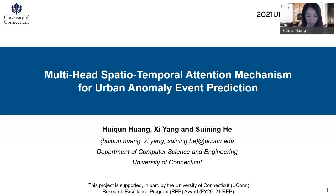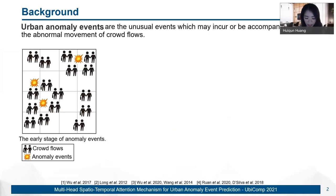Urban anomaly events, such as traffic accidents and noise incidents, are unusual events which may incur or be accompanied by the abnormal movement of crowd flows. The figure on the screen shows an example distribution of crowd flows and anomaly events in the city. When in the early stage or in the absence of anomaly events, the areas on the lower left and upper right of the city are usually more crowded than other regions.